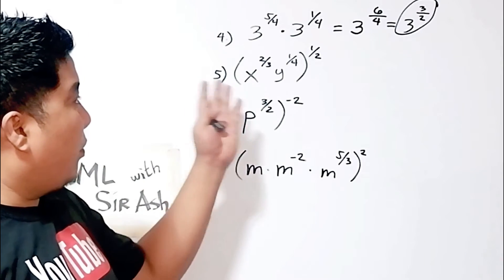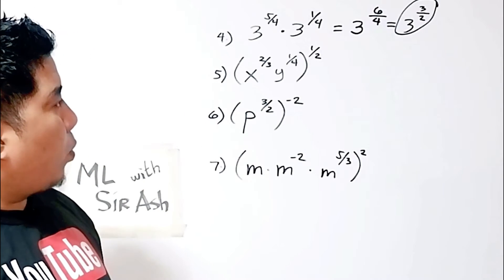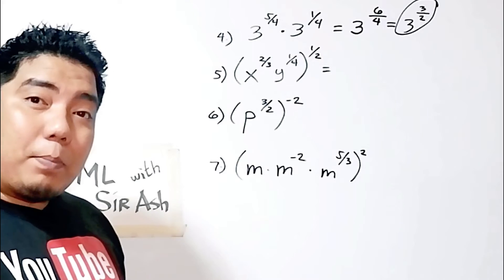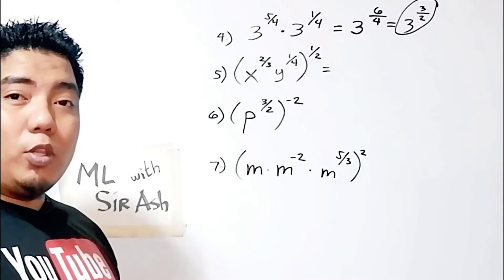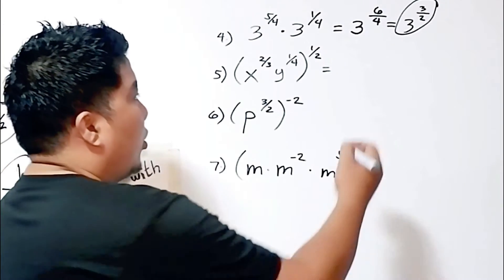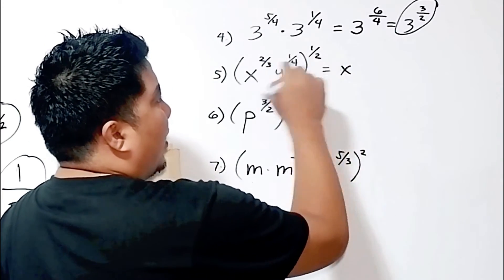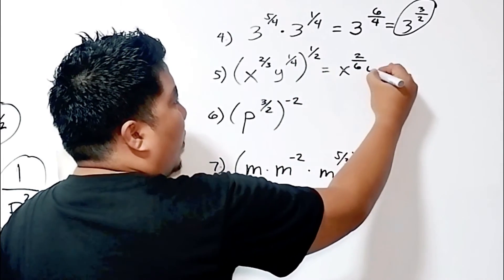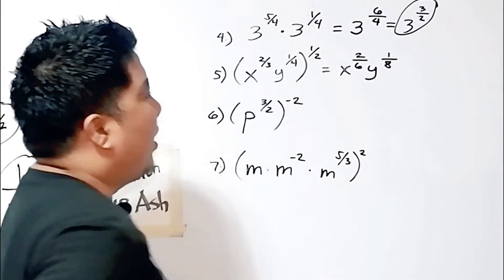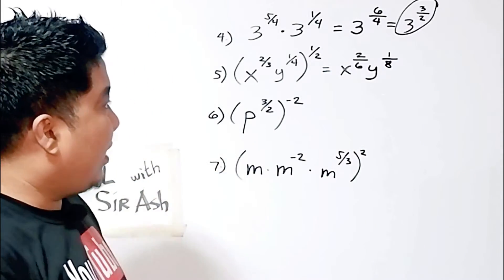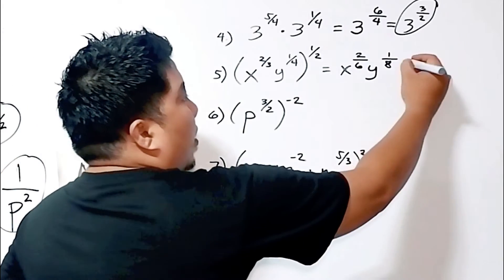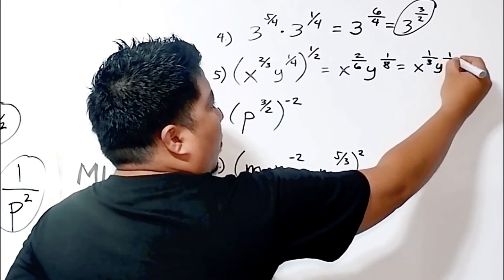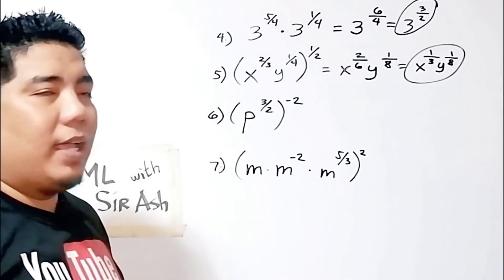Fourth example: 3 to the power of 5 fourths times 3 to the power of 1 fourth. This is the product rule — same base, so copy the base and add the exponents. 5 fourths plus 1 fourth gives 6 fourths, which simplifies to 3 halves. Your final answer is 3 to the power of 3 halves. Fifth example: the quantity x to the 2 thirds, y to the 1 fourth, raised to the power of 1 half. Multiply the exponents: 2 thirds times 1 half gives 2 over 6, and 1 fourth times 1 half gives 1 over 8. Simplifying 2 over 6 to 1 third, the answer is x to the 1 third, y to the 1 eighth.